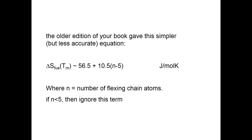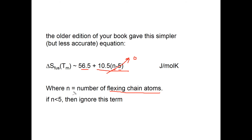The older edition of the textbook gives a simpler equation: delta S of fusion = 56.5 J/mol·K + 10.5 times (N − 5), where N is the number of flexing chain atoms. If you have fewer than 5 flexing chain atoms, you ignore that term entirely and just estimate delta S of fusion as 56.5 J/mol·K. The simpler the equation, the more uncertainty it has, but it's a place to start.